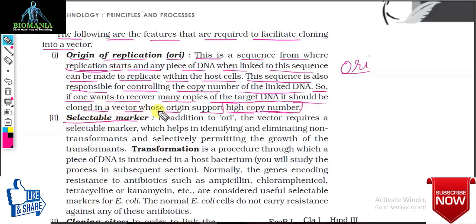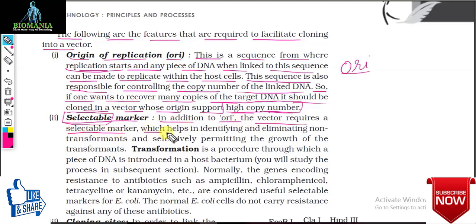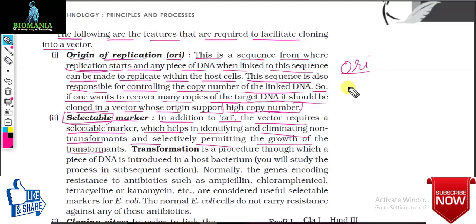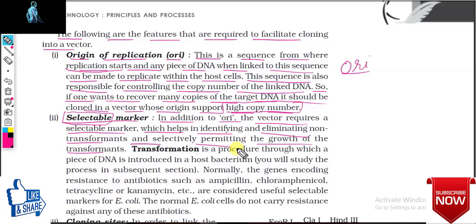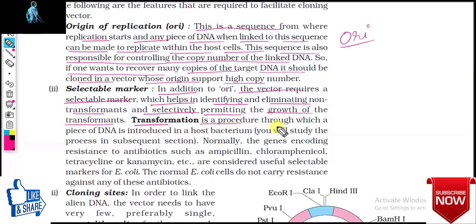Next, selectable marker. In addition to ORI, the vector requires a selectable marker which helps in identifying and eliminating non-transformants, and selectively permitting the growth of the transformants. We need selectable markers to remove non-transformants. Transformation is a procedure through which a piece of DNA is introduced into a host bacterium.